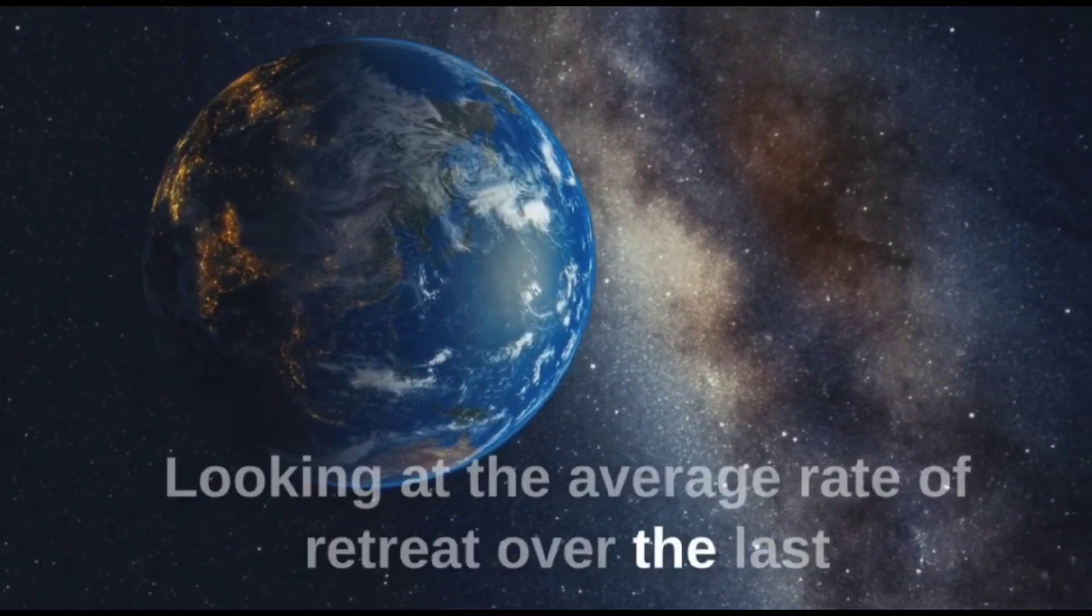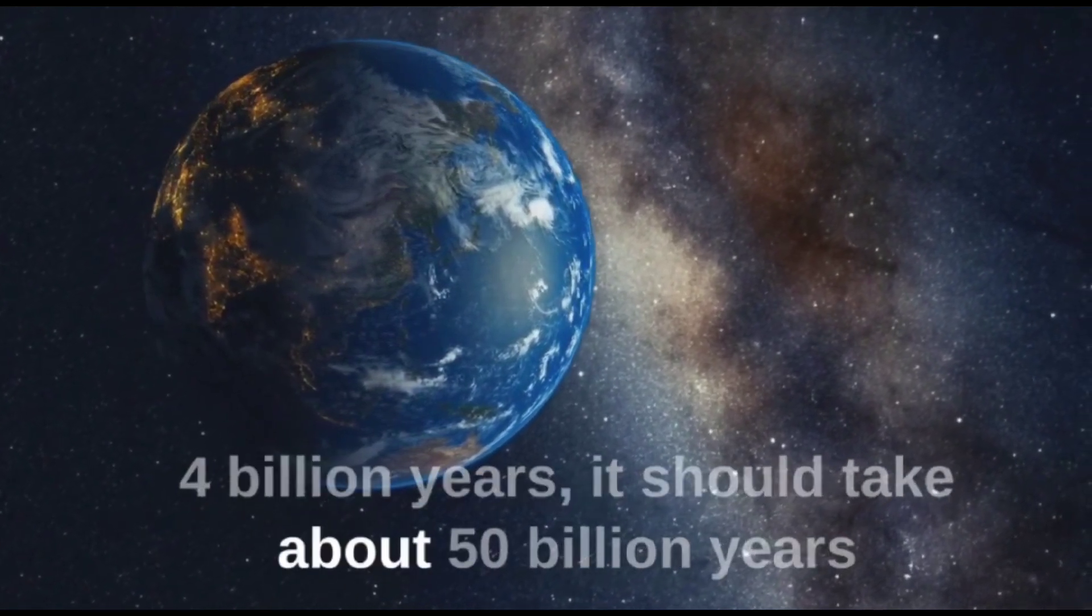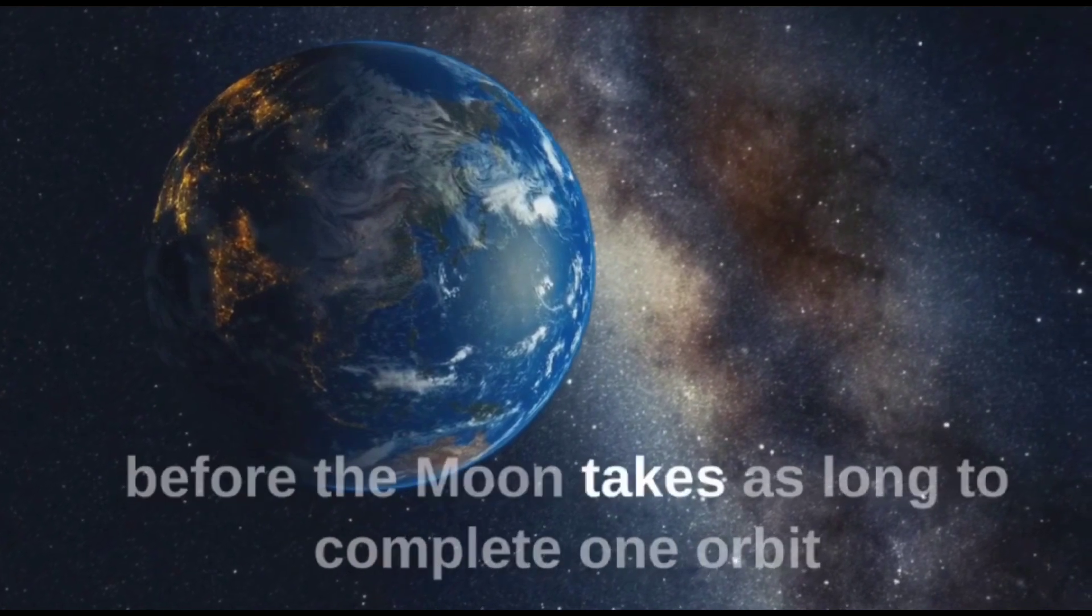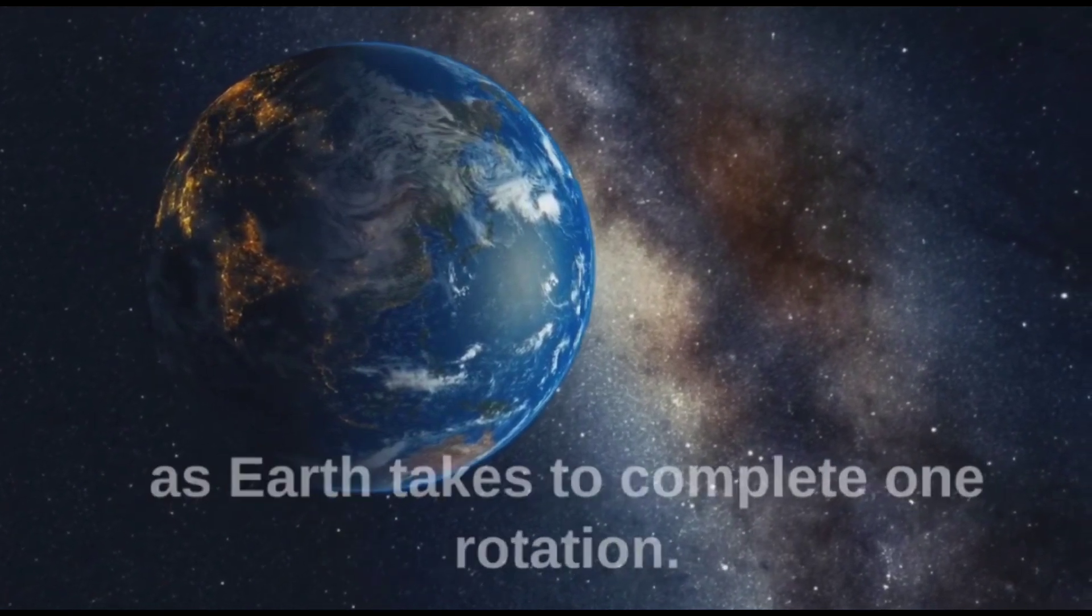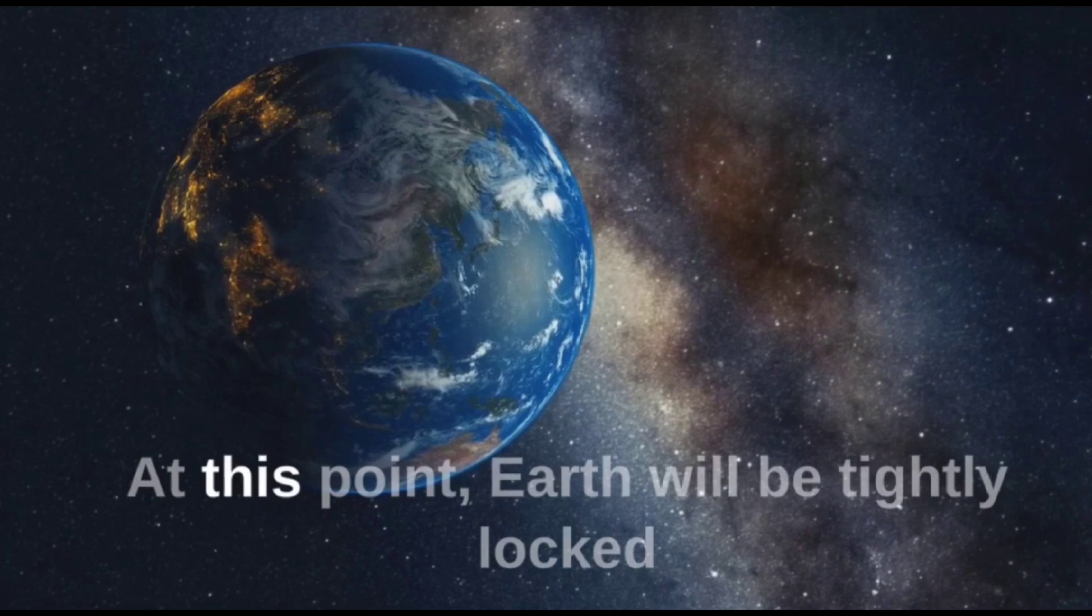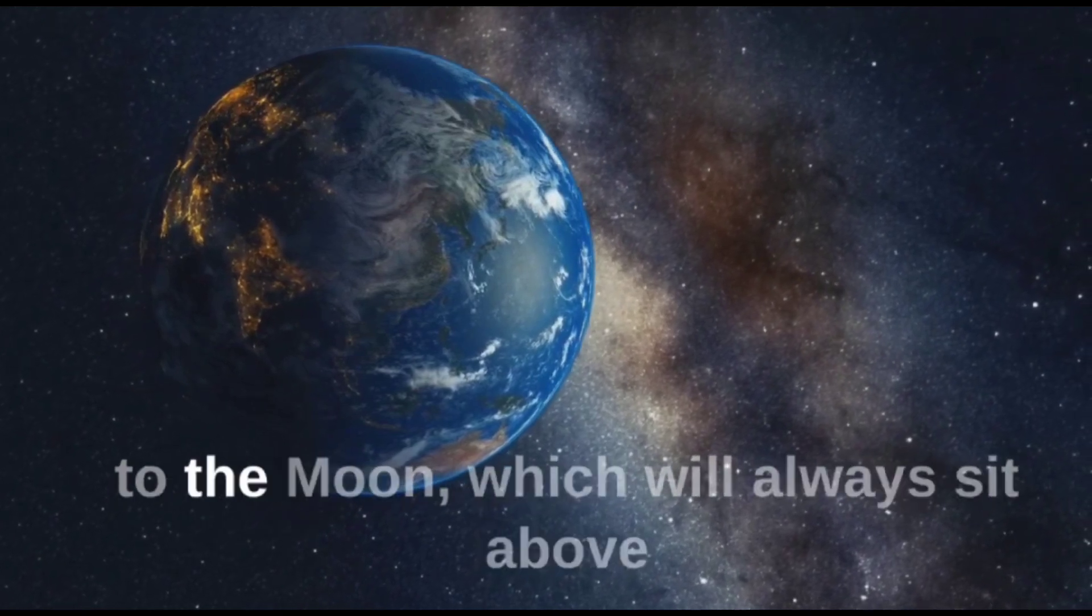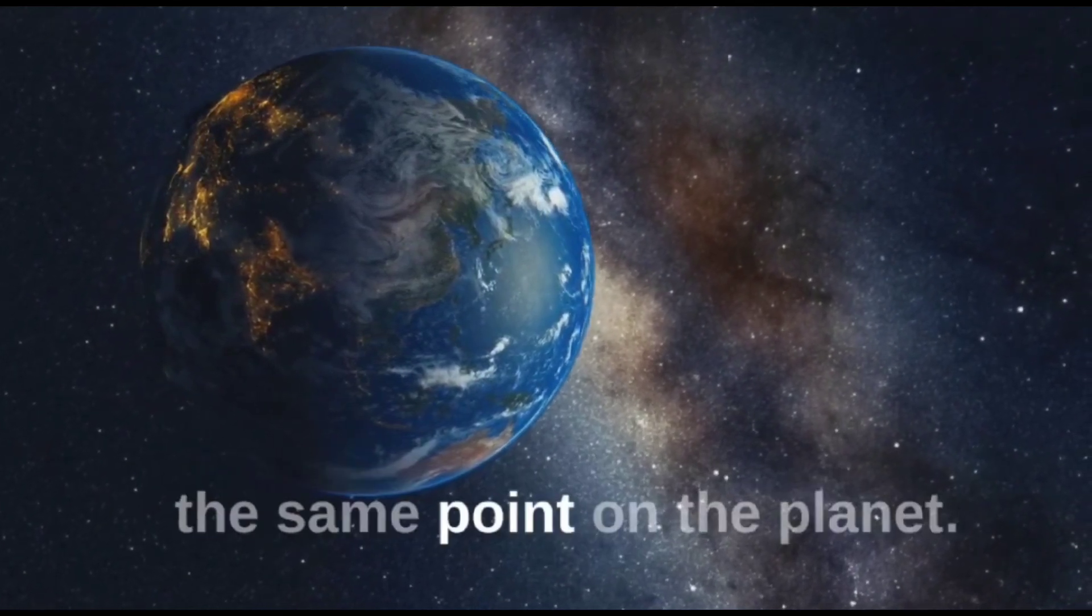Looking at the average rate of retreat over the last 4 billion years, it should take about 50 billion years before the moon takes as long to complete one orbit as Earth takes to complete one rotation. At this point, Earth will be tidally locked to the moon, which will always sit above the same point on the planet.